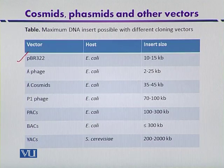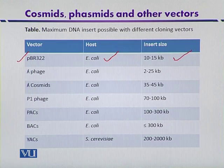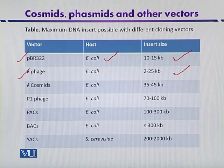We can discuss pBR322 first. The host organism is E. coli and it can clone up to 10 to 15 kilobase DNA fragments. Next are the lambda phages, which again can infect E. coli as the host organism, and the DNA fragment may be up to 25 kilobase.